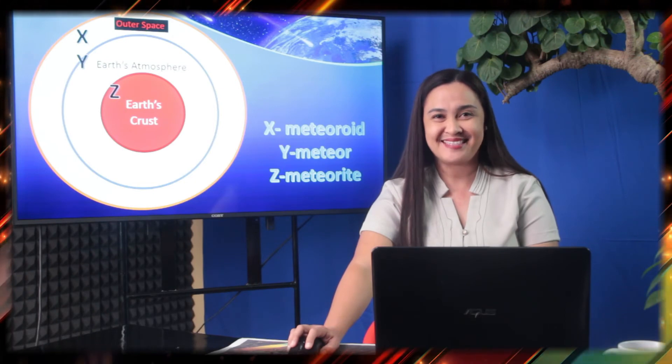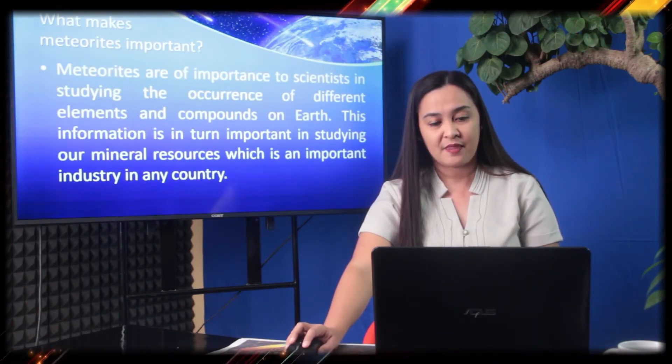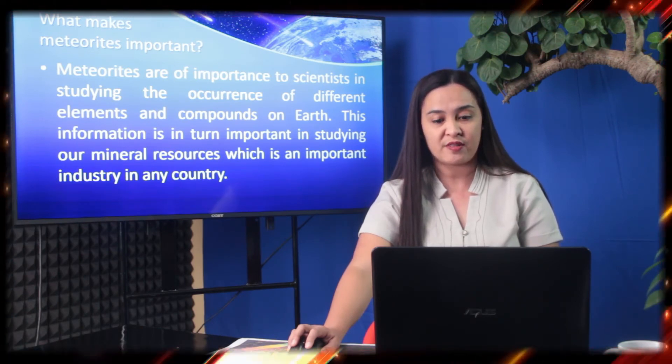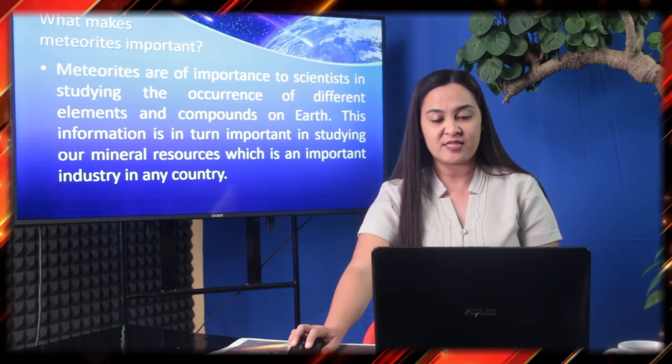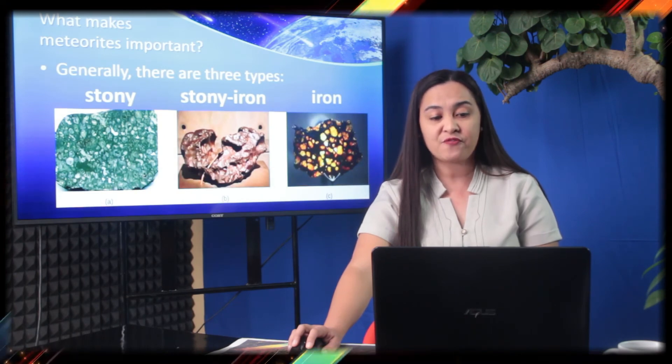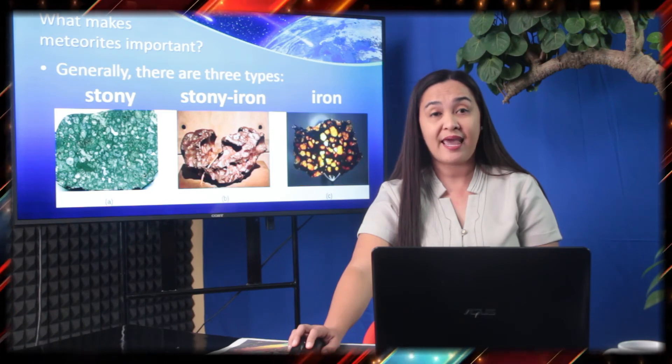How's the learning exploration so far, students? Earlier, we mentioned that meteorites are rocks from space that have landed on Earth's surface. But what makes meteorites important? Meteorites are of importance to scientists in studying the occurrence of different elements and compounds on Earth. This information is in turn important in studying our mineral resources, which is an important industry in our country. Generally, there are three types of meteorites: stony, stony iron, and iron.